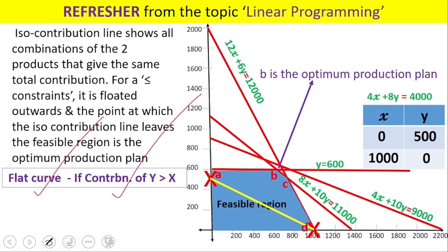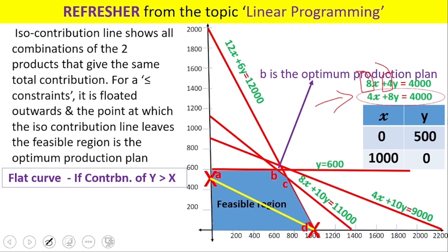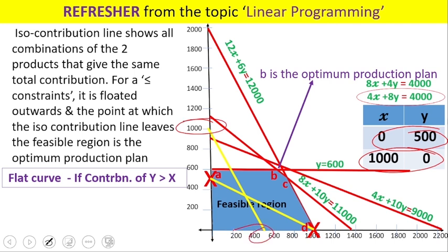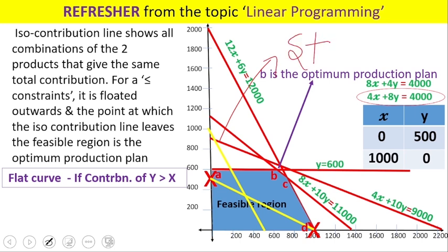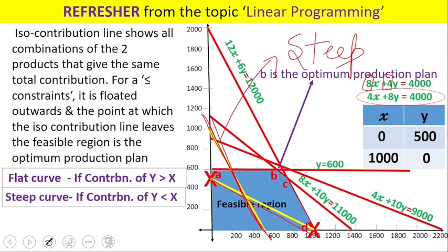Instead of 4x + 8y = 4,000, consider 8x + 4y = 4,000 — where contribution of X is greater than contribution of Y, the reverse of before. The points swap: (0, 500) and (1,000, 0) become (0, 1,000) and (500, 0). This produces a steep curve. A steep iso-contribution line means the contribution of X is greater than that of Y.